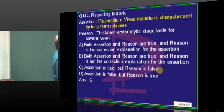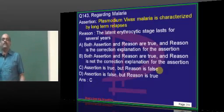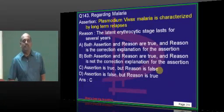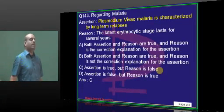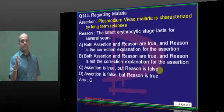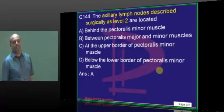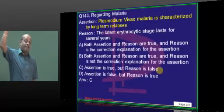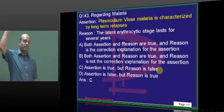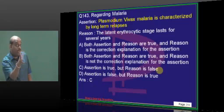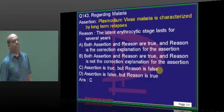Plasmodium vivax — relapses are there, but because of the liver forms, not because of erythrocytic stages. Falciparum malaria relapses are due to the prolonged erythrocytic phase — they do not have any liver forms.